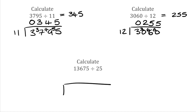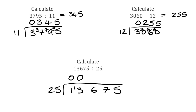For our very last question today, we have 13,675 divided by 25. 25s into 1 don't go, so we carry the 1 over. 25s into 13 also don't go, so we carry that 13 over. How many 25s fit into 136? That would be 5, because 25 times 5 is 125, leaving a remainder of 11. We then see how many 25s go into 117 — that would be 4, because 25 times 4 is 100, leaving a remainder of 17. And finally, how many 25s fit into 175? There are 4 in 100 and 3 in 75, so 4 plus 3 is 7. Our final answer is 547.